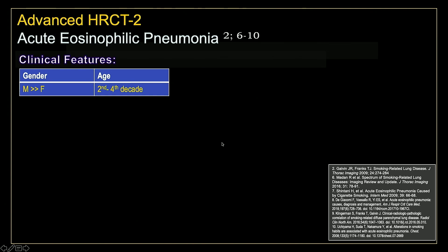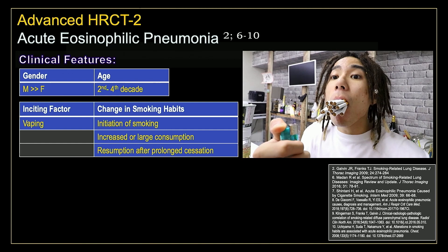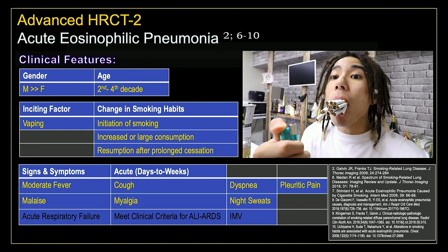We typically expect to see this disease in male patients — typically male recruits or male college students — but keep in mind you can see it in female patients. They're typically in the second to fourth decade of life. The inciting factor is typically cigarette smoking: initiation of smoking in people who have never smoked before, an increased or large consumption of cigarettes as in this case, resumption of cigarette smoking after a prolonged period of cessation, and recently it's also been described with vaping. This is one of the few smoke-related lung diseases that presents with patients acutely ill. They'll have a moderate fever, malaise, cough, myalgia, dyspnea, night sweats, and pleuritic chest pain.